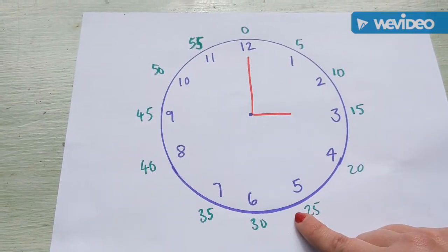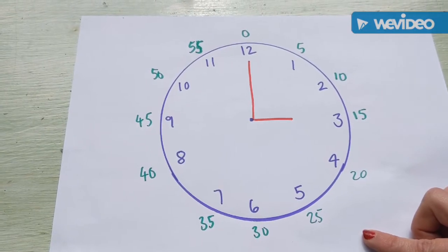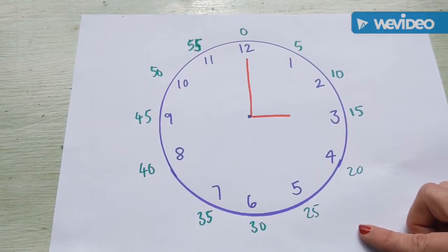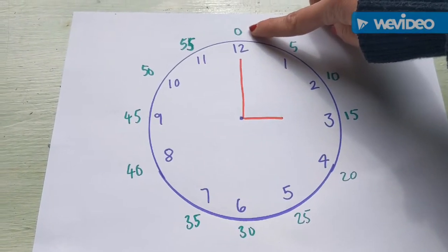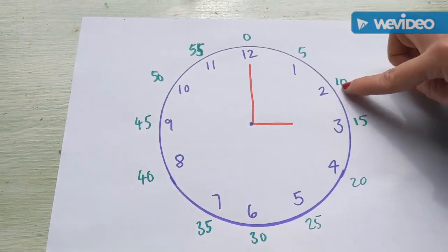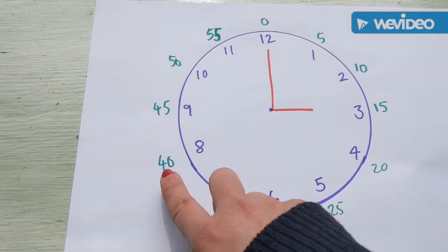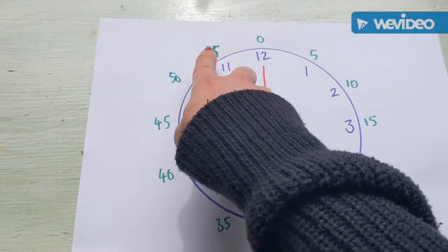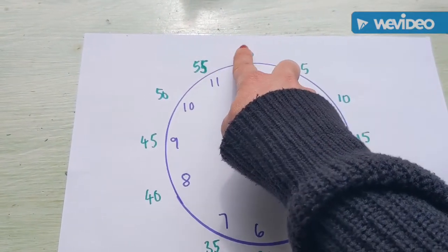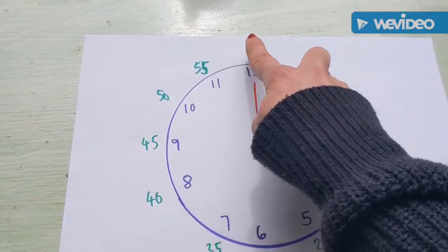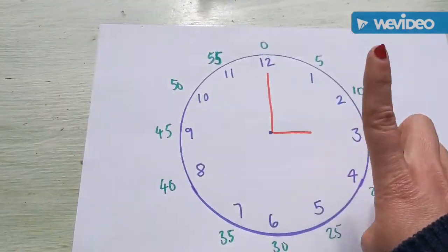We know from our work earlier in the week that there are 60 minutes in one hour. Look what I've done here - we start at zero and we're going around in our fives: 5, 10, 15, 20, 25, 30, 35, 40, 45, 50, 55. I could write 60 on there but I haven't because it's a little bit confusing with the zero - but really that is 60 as well. So it's 60 minutes in one hour, and when the minute hand goes all the way around it will have gone around one hour.